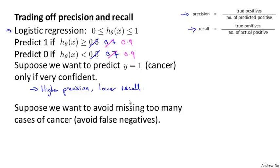Now consider a different example. Suppose we want to avoid missing too many actual cases of cancer — we want to avoid false negatives. If a patient actually has cancer but we fail to tell them, that could be really bad. If we tell a patient they don't have cancer, they won't go for treatment. If it turns out they have cancer but we fail to tell them, they may not get treated at all and could die. So when in doubt, we want to predict y equals 1 so that they at least look further into it and can get treated in case they do turn out to have cancer.